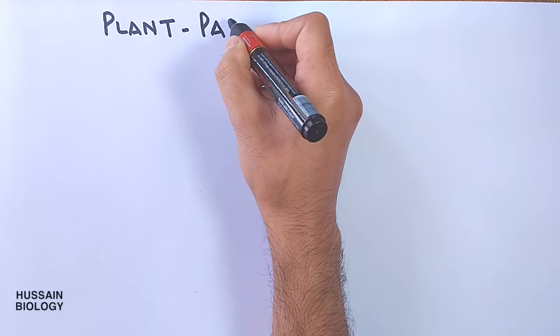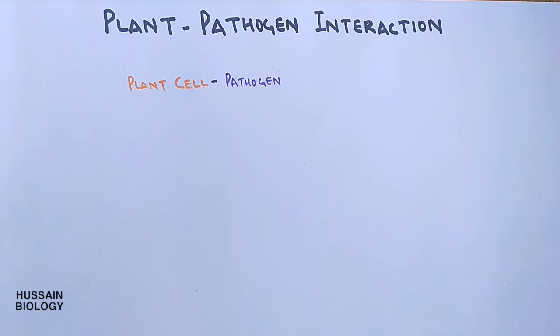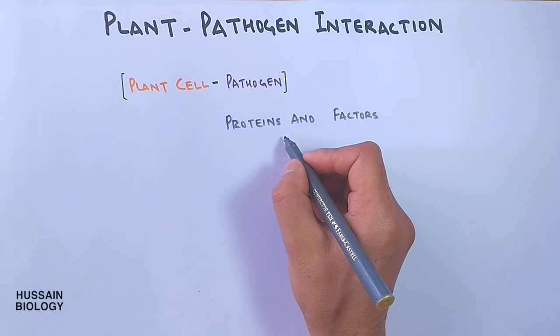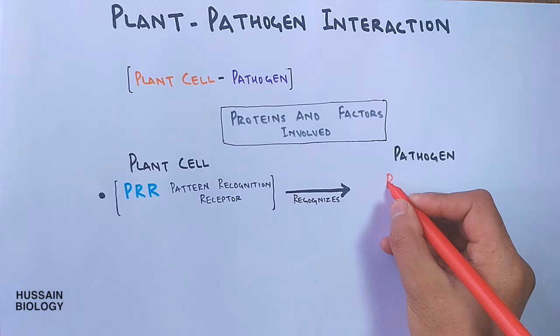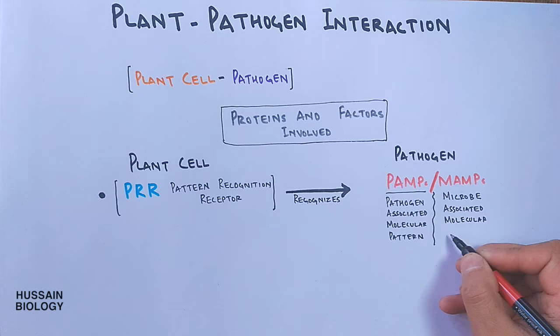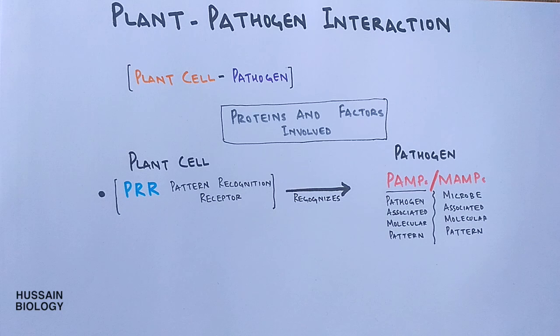In this video we will be discussing plant-pathogen interaction, where we will see how a pathogen interacts with the plant cell. Before getting into the interaction pathway, first we will see what proteins and factors are involved. In the plant cell, it has PRR on its surface — that's pattern recognition receptors — and in the pathogen, it has PAMP or MAMP, pathogen-associated molecular pattern or microbe-associated molecular pattern. It is this PAMP molecule which recognizes PRR of the plant cell.